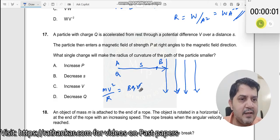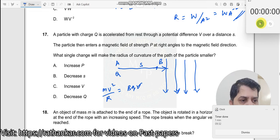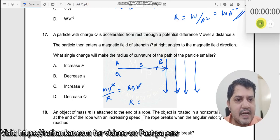Therefore, where BQV is the driving force, MV square by R is the centripetal force. This velocity and this velocity will go off. So I will get R is equal to MV divided by BQ.